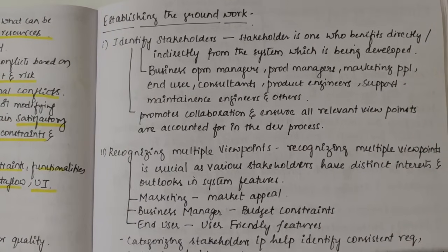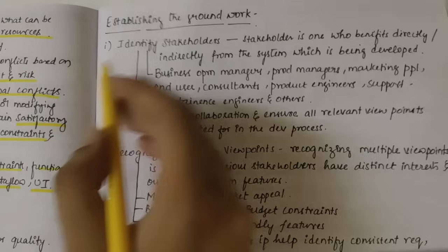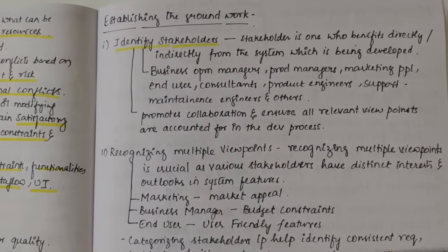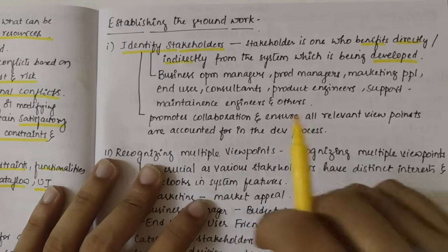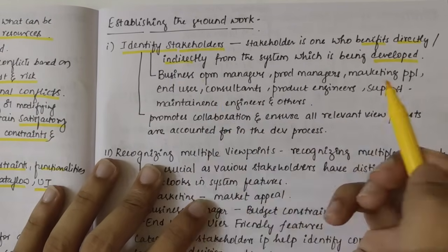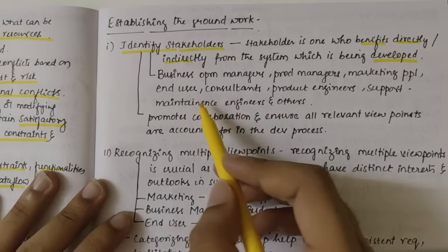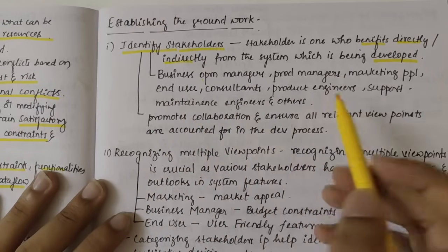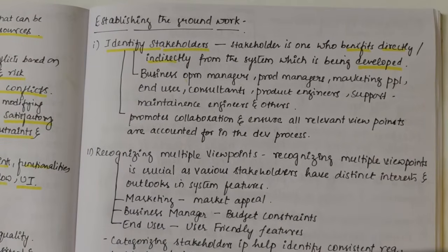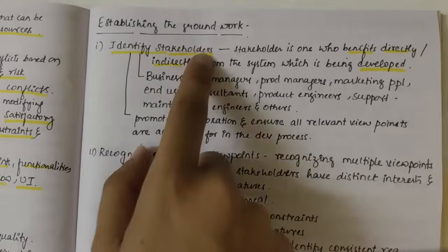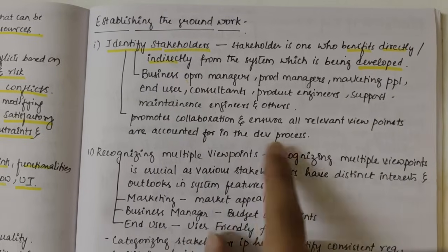Next we have Establishing the Groundwork. There are steps to follow here. The first step is to identify the stakeholders — those who benefit directly or indirectly from the system we are developing. Stakeholders can comprise business operation managers, product managers, marketing people, end users, consultants, product engineers, support, maintenance engineers, and others. Identifying stakeholders is important because requirements vary depending on them. It promotes collaboration and ensures all relevant viewpoints are accounted for in the development process.